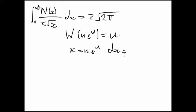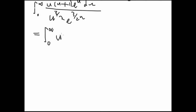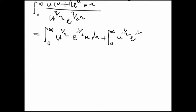Differentiating both sides gives dx = (u+1)eᵘ du. Since W(∞)=∞ and W(0)=0, we have the integral from 0 to ∞ of u times dx, which is now (u+1)eᵘ du, divided by (u·eᵘ)^(3/2). That equals u², so we get u^(1/2)·e^(-u/2) du plus basically the same term with power 1 minus 3/2, which is minus 1/2, times e^(-u/2) du.